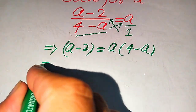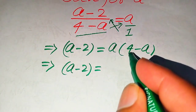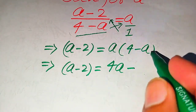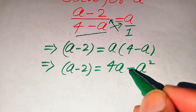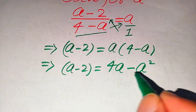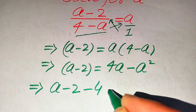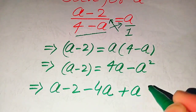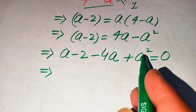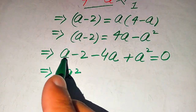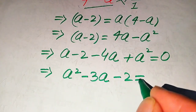In the next step we need simplification. We expand the right side: a minus 2 equals 4a minus a squared. We then move all terms from the right hand side to the left hand side. Moving 4a gives minus 4a, and moving minus a squared gives plus a squared. Combining like terms: a squared minus 3a minus 2 equals 0.